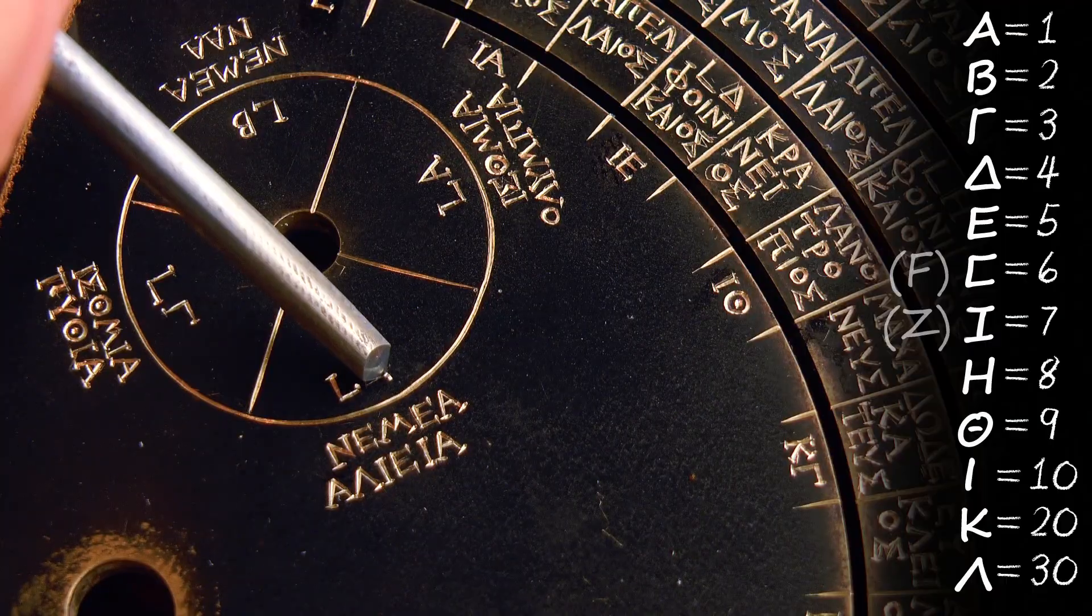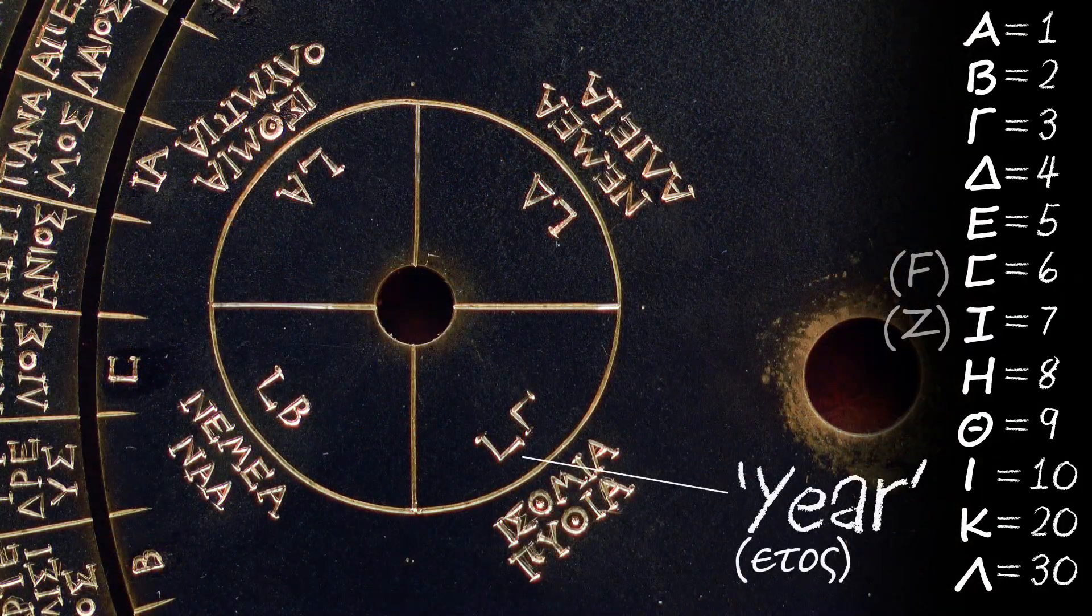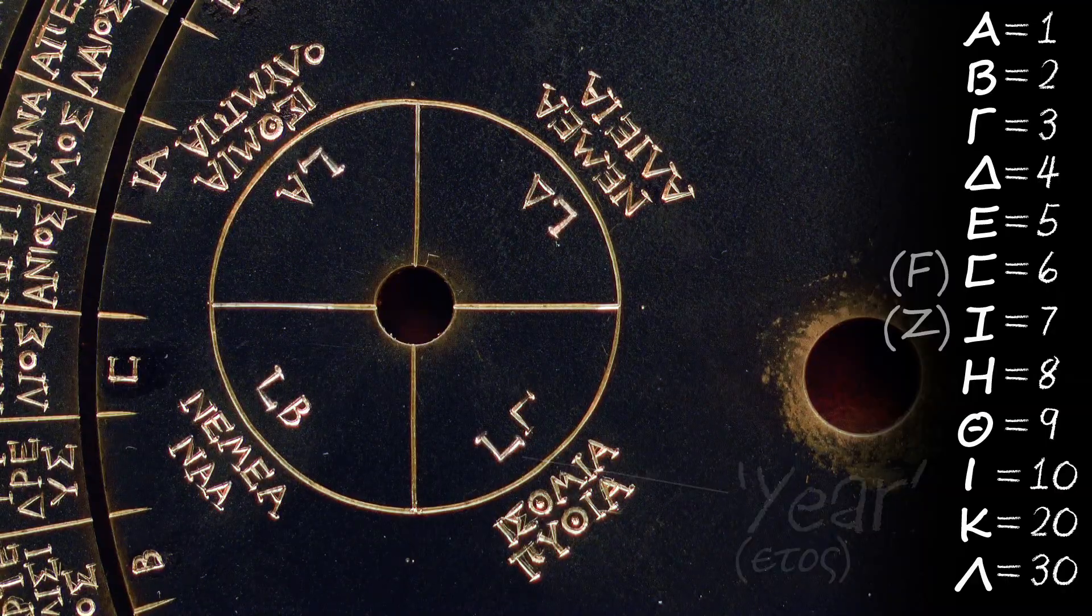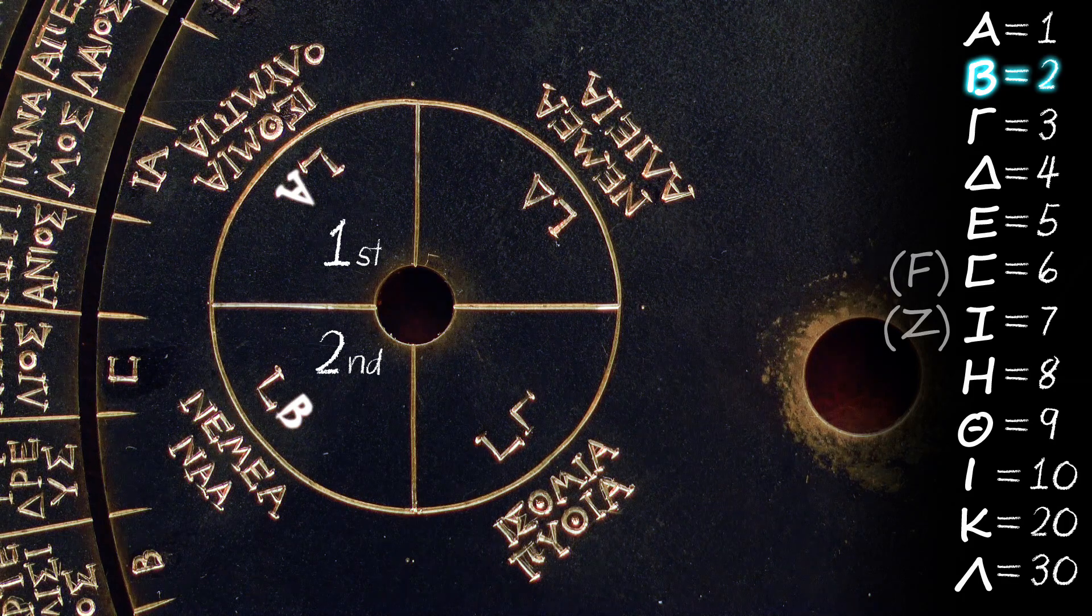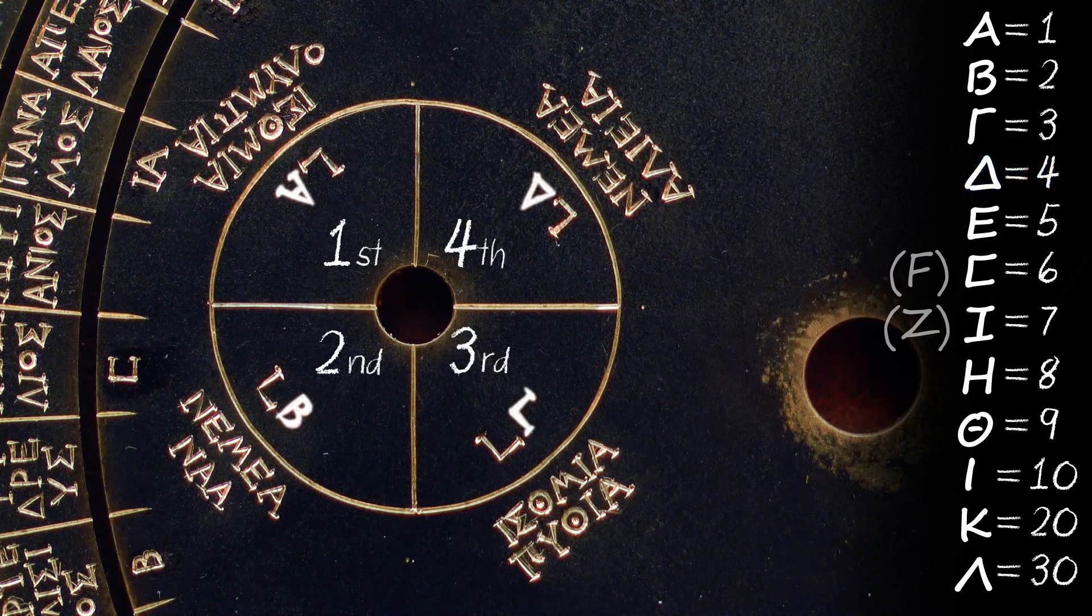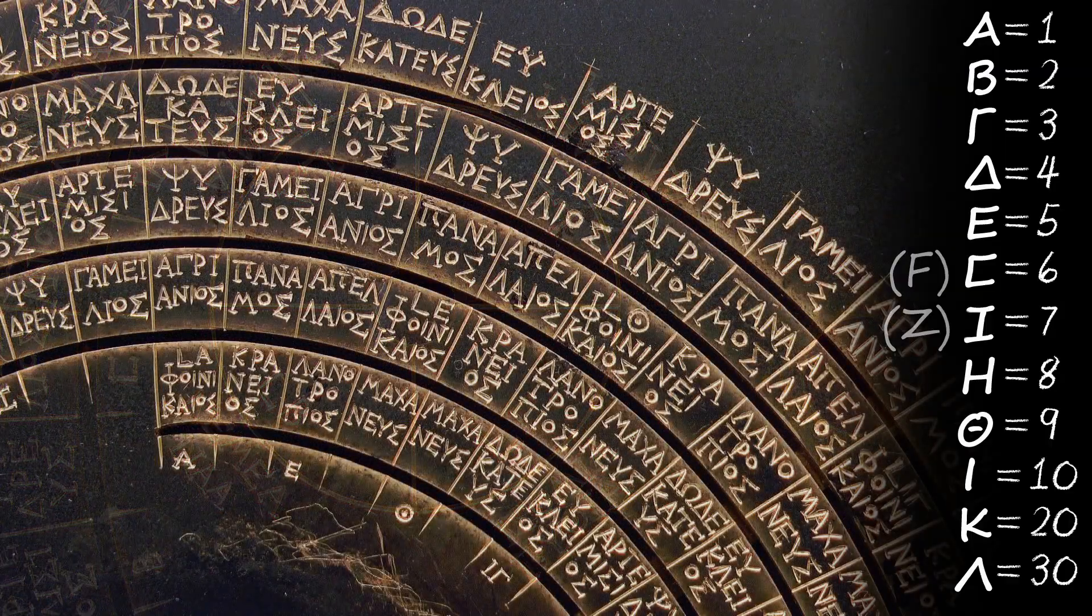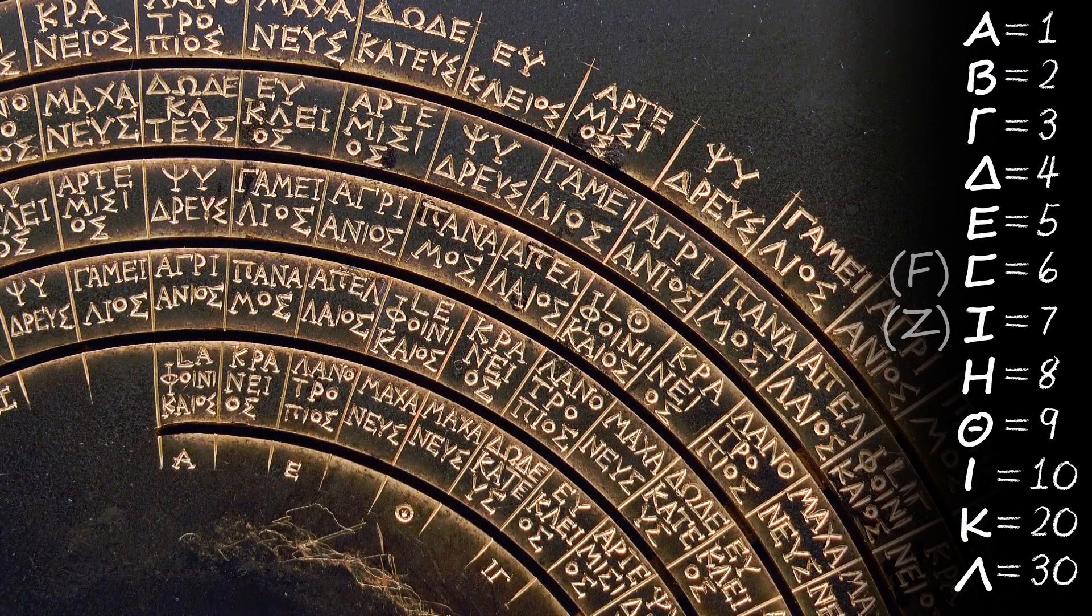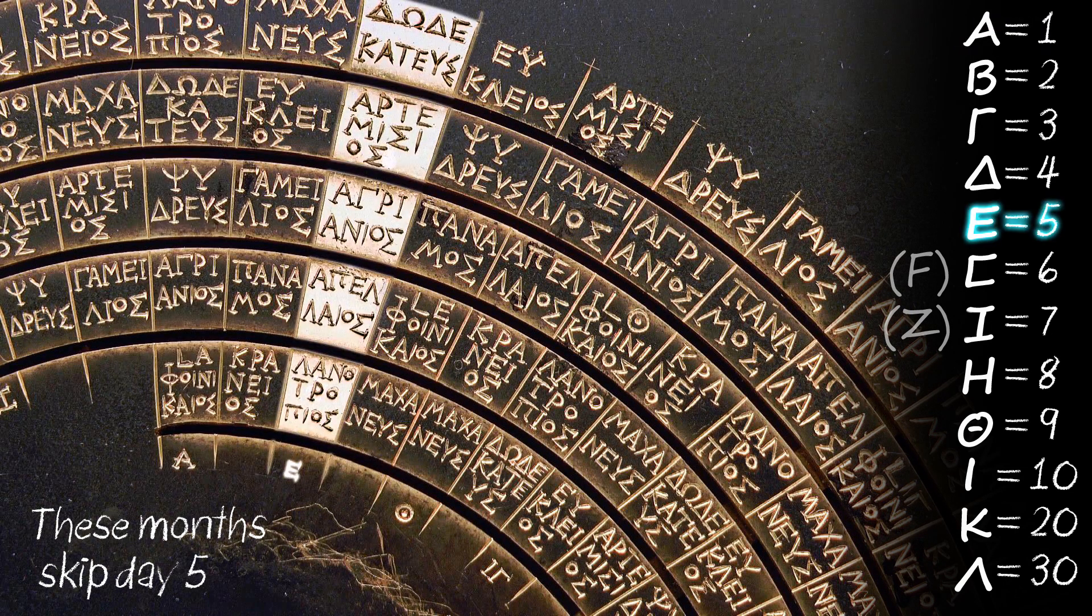A good example to see this in use is the games dial. When combined with the L-shaped symbol for year, the letters alpha, beta, gamma and delta represent the first, second, third and fourth years of the games cycle. And we also see this system used for the skipped days of the hollow months. The months on the radial sector corresponding with alpha skipped day 1, with epsilon day 5, with theta day 9.